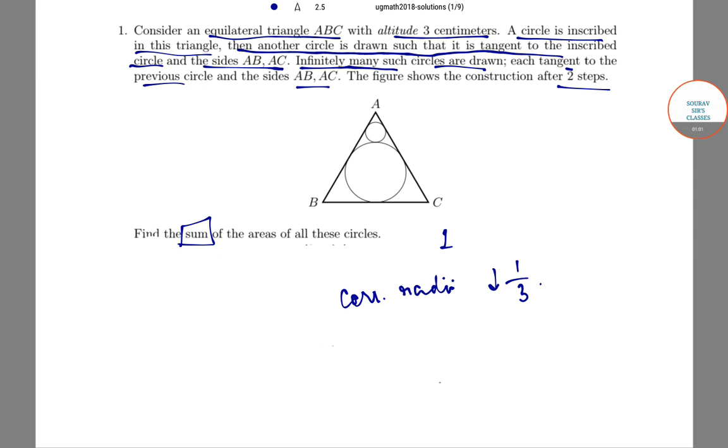Let A denote the total area of the circles. The total area would be π(1)² + π(1/3)² + π(1/9)² and so on. This becomes an infinite GP.